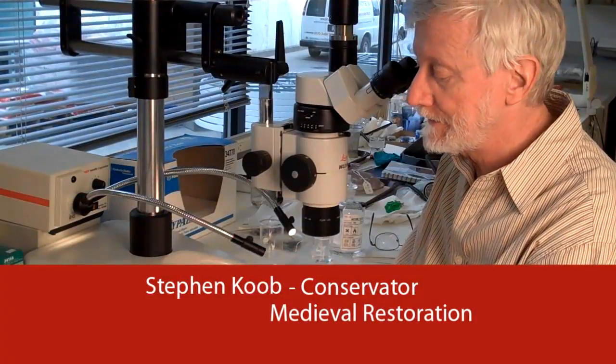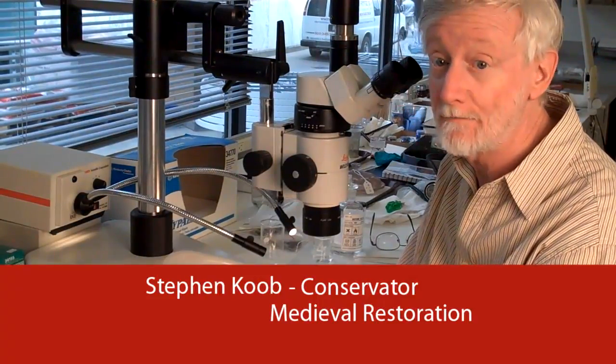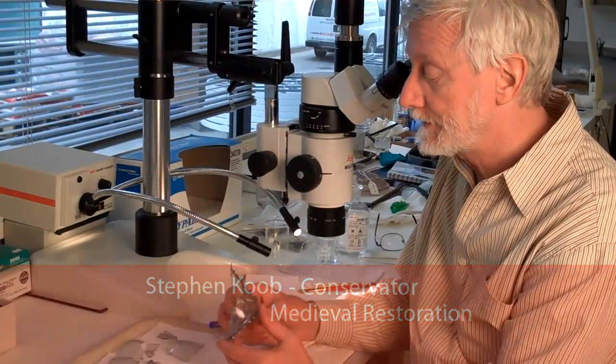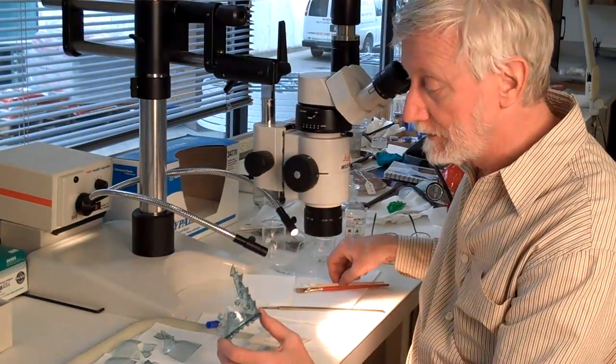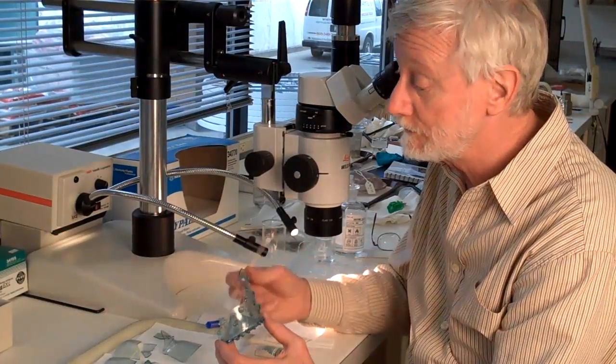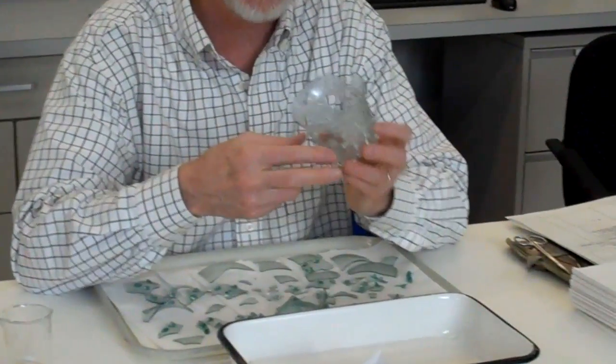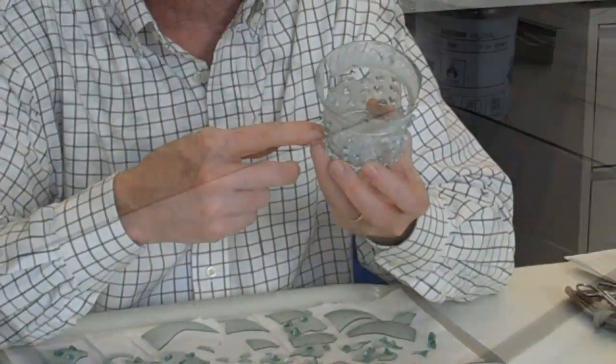This piece is here for conservation. It's on loan from the Schaffhausen Museum in Switzerland. It's a medieval printed beaker broken into about 48 pieces. Part of the loan agreement was to retreat these pieces that have been in their collection since they were founded in 1920.